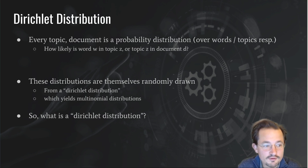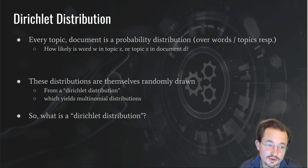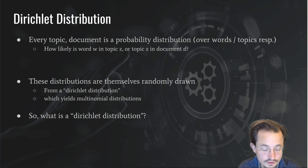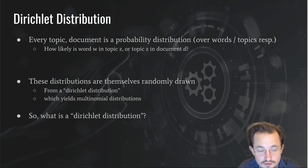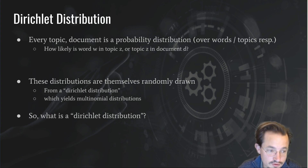Technically, in a topic model, every topic and every document is a probability distribution. The idea that a document is a probability distribution means that if you have a document about football and corruption, every word you draw has a chance of being in topic A and a chance of being in topic B. So it's a distribution of probabilities over the various topics in that document — and the same applies for topics over words. Since there are multiple of these distributions — one for each document — these distributions are actually randomly drawn from a set of distributions called the Dirichlet distribution. When you sample from the Dirichlet distribution, you get a multinomial distribution, or in other terms, a probability distribution over multiple groups, for example topics.